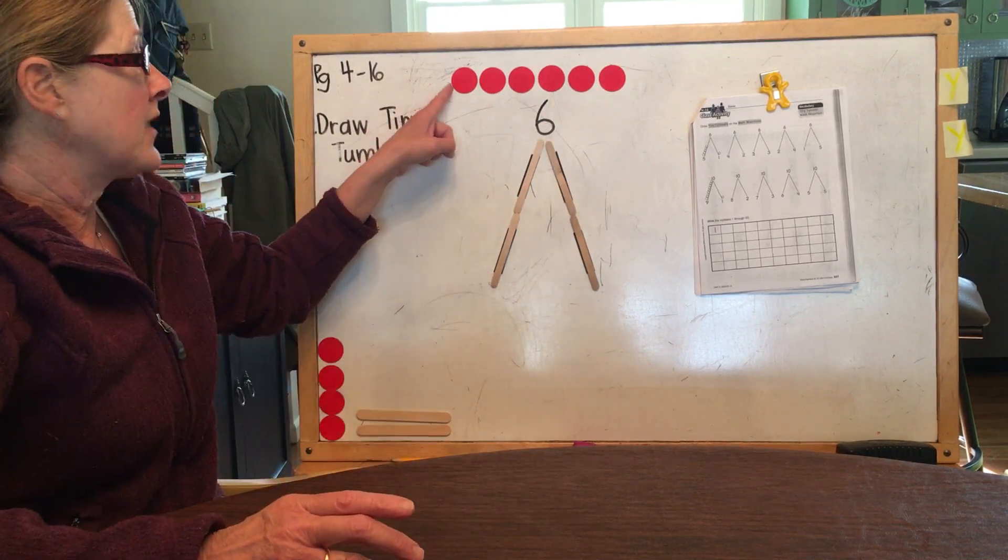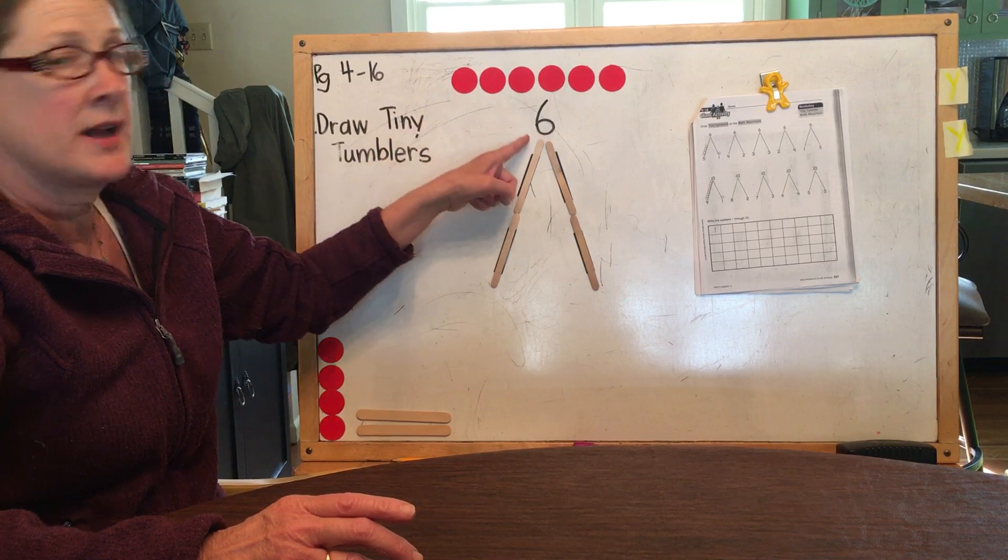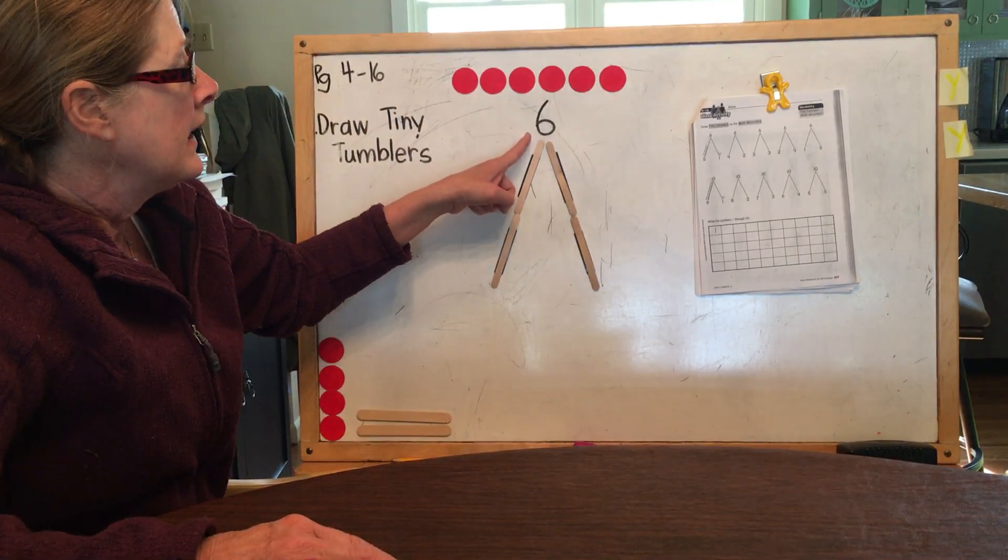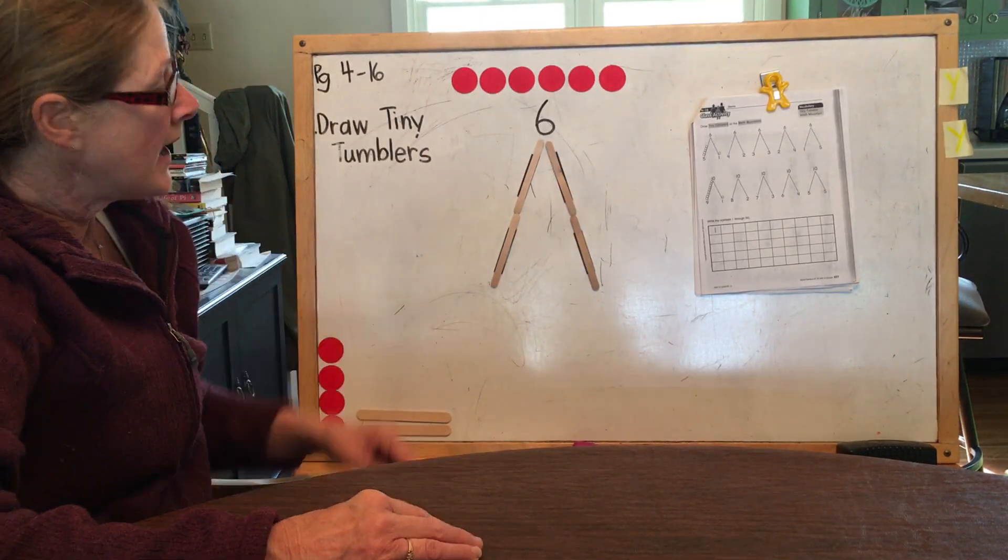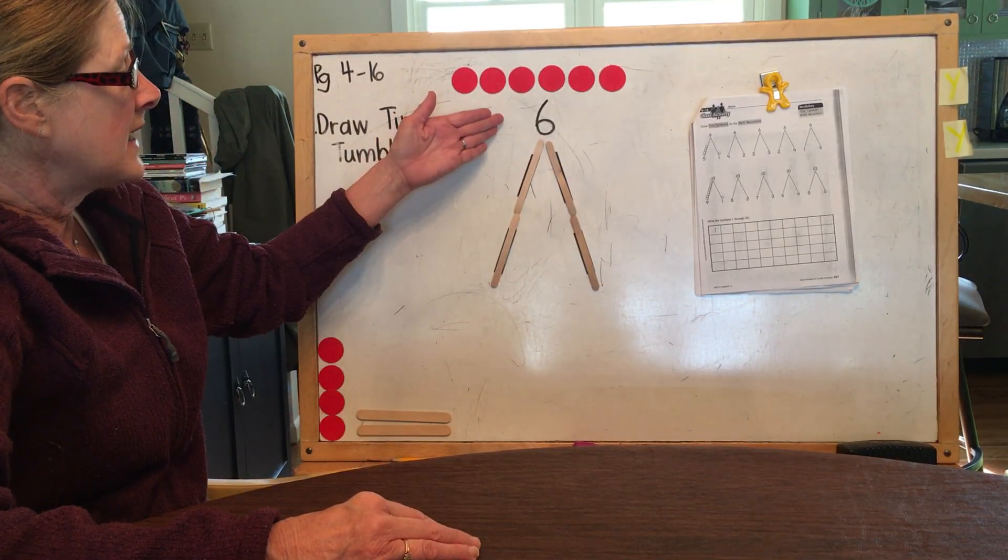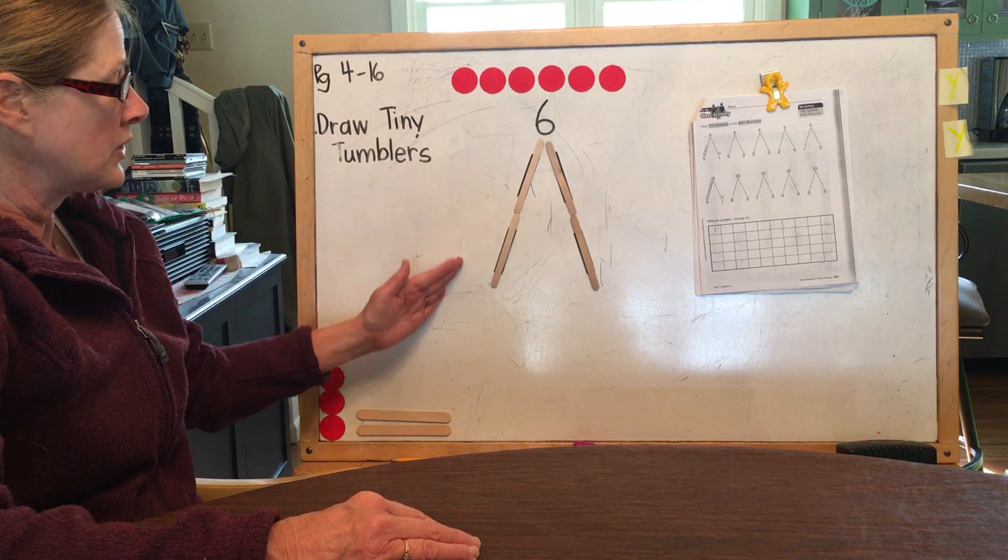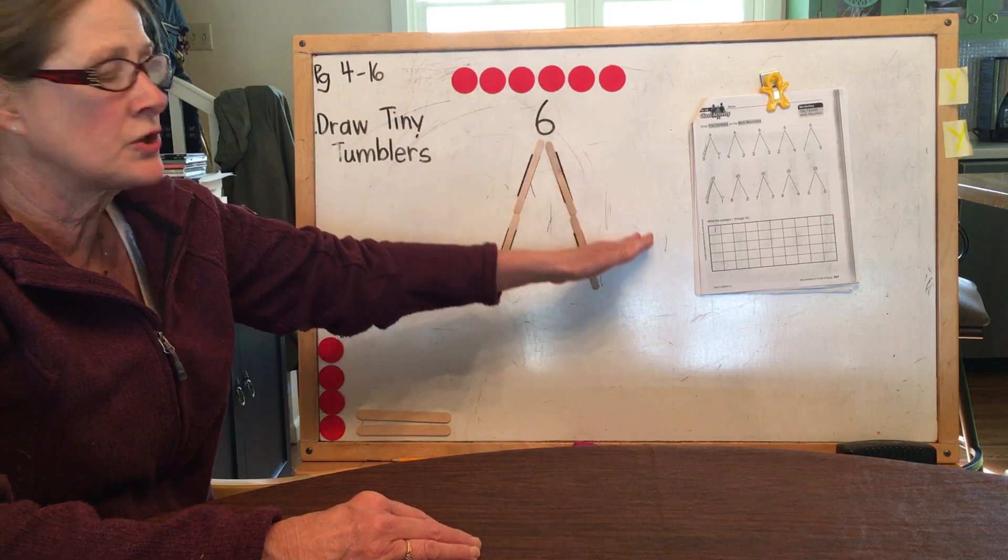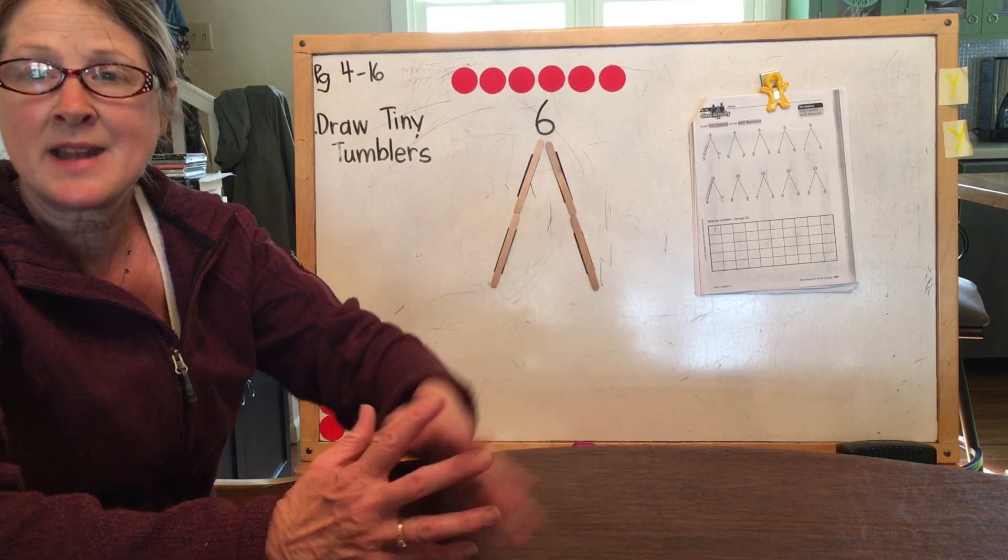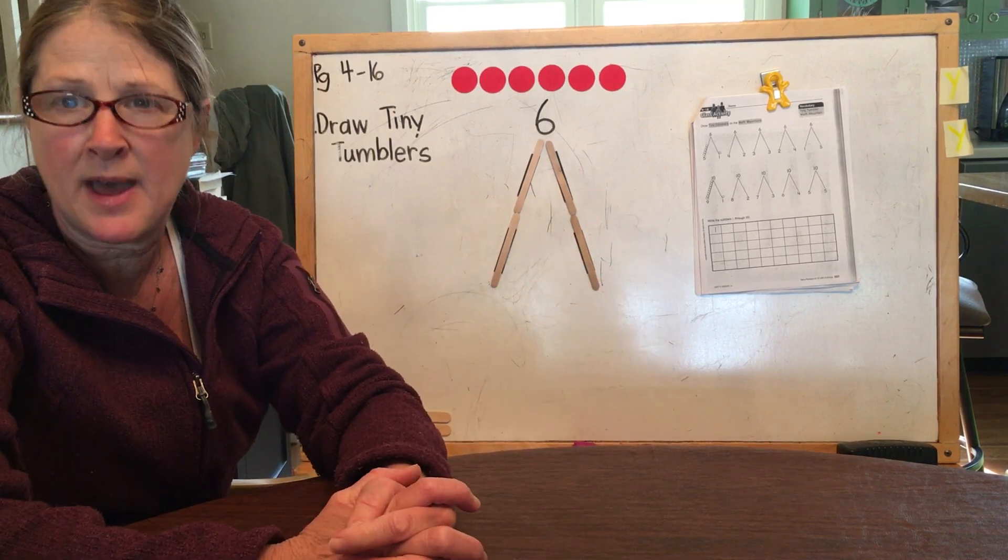They match six tiny tumblers on sixth math mountain. And our job today is to practice taking some of the tiny tumblers to this side of math mountain and all the others go to the other side. That's the rule about math mountains.